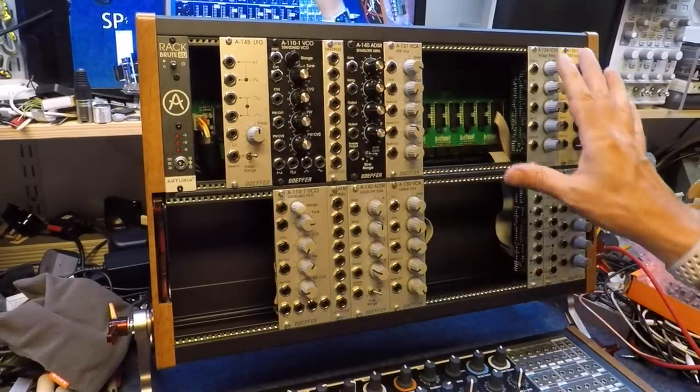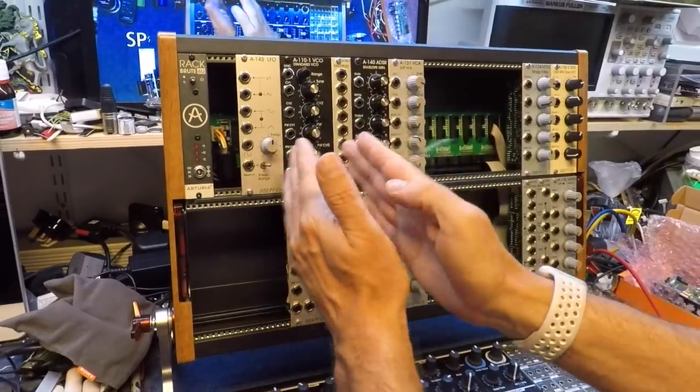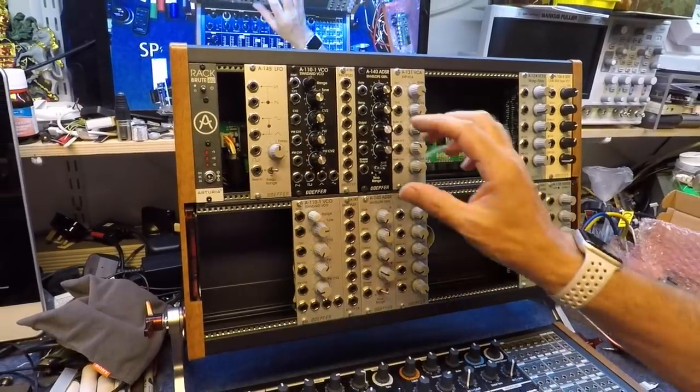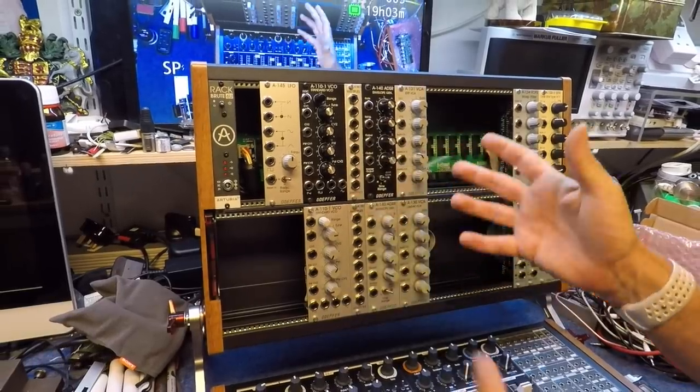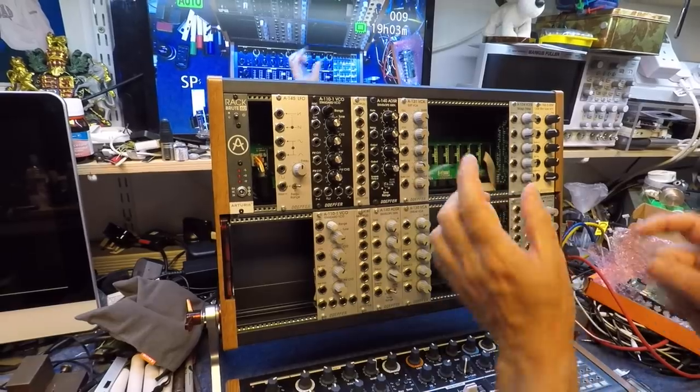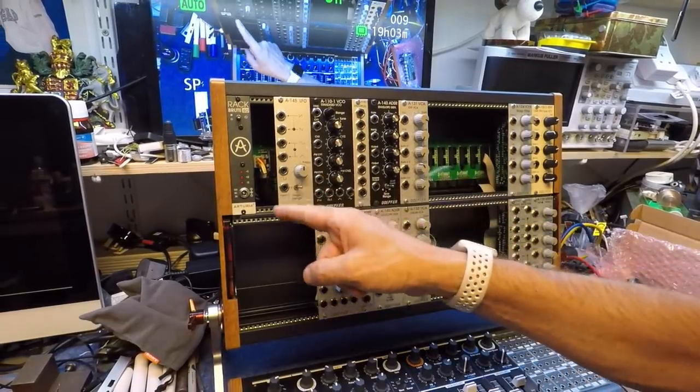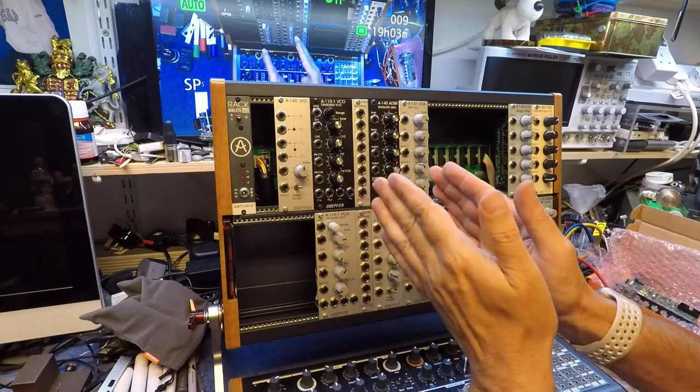Most Eurorack gear comes in HP size, which is the horizontal pitch this way. Most of it is in even numbers - 4, 6, 8, 10, and so on. Now, the problem on the Rackbrute is the power supply is 5 HP, and that makes it odd.